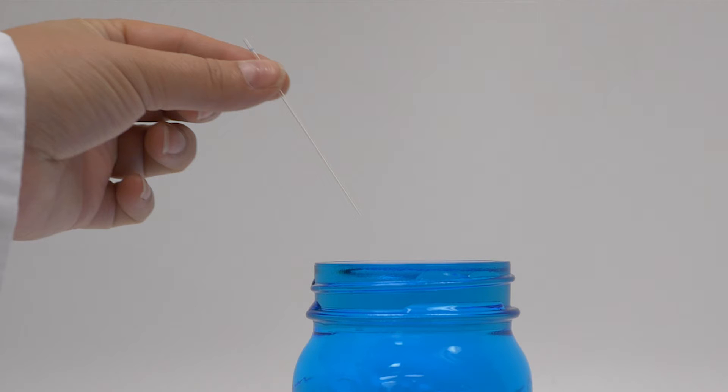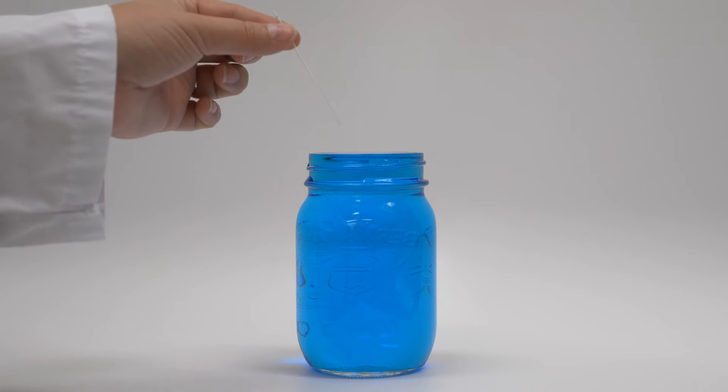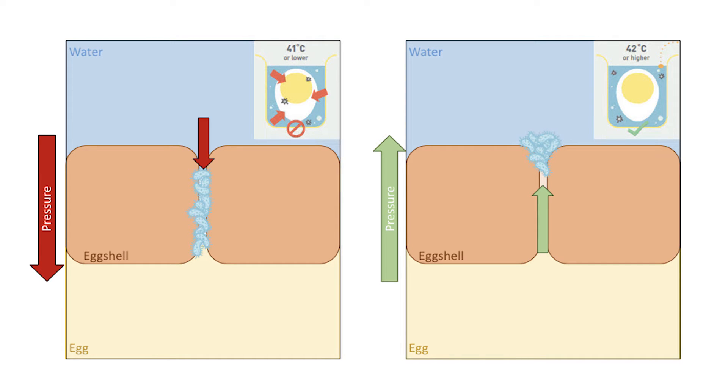Imagine that this capillary tube is just one of the 17,000 pores that are found on an eggshell. When the capillary tube touches the top of the water, you can see that it sucks up the water immediately. Any bacteria in the water or present in the pores would also enter the capillary tube.